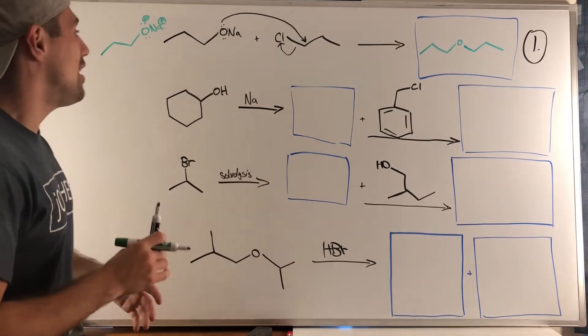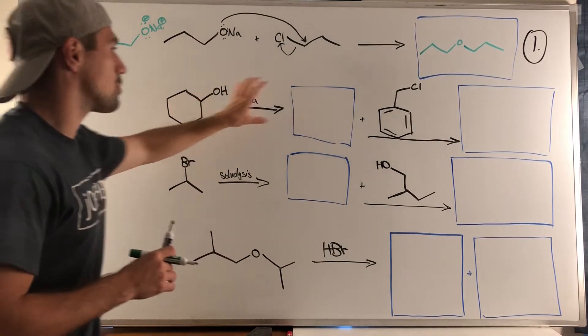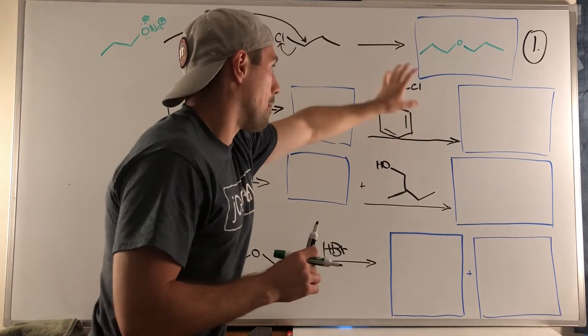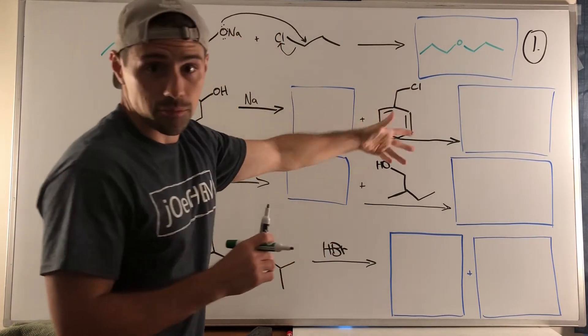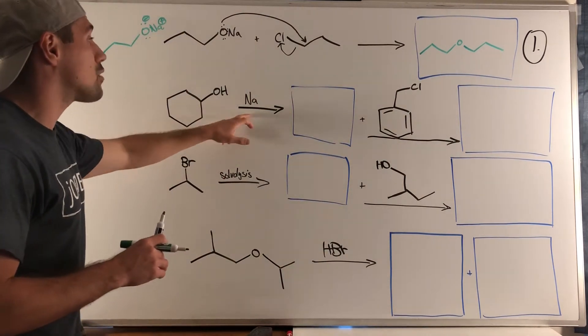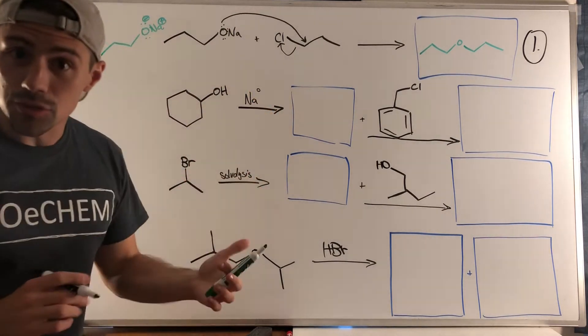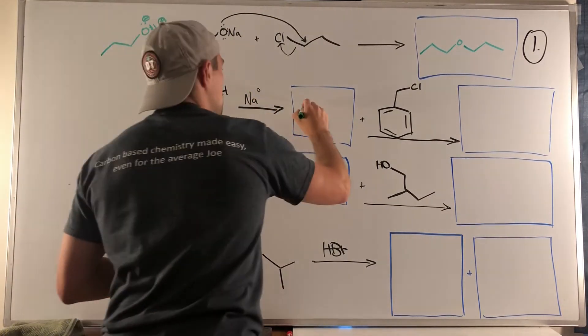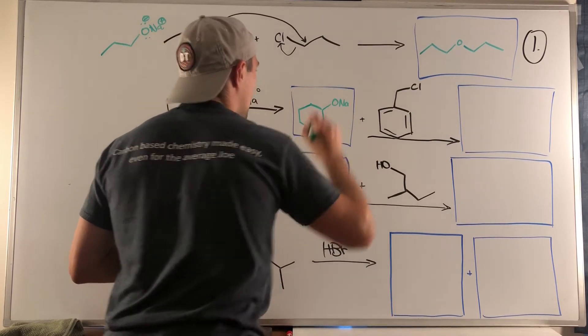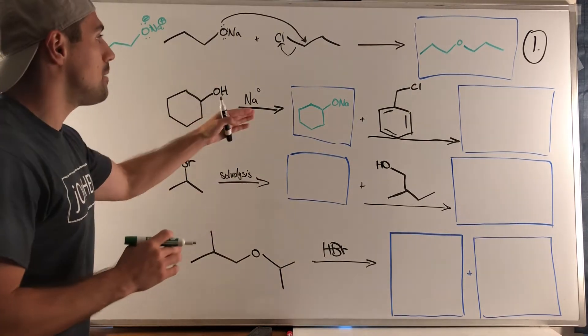In problem two, you can see in this first step we have to predict what's happening here, and then we're going to take the results of this and combine it with this substrate and predict a product. When we have an alcohol—I could include this little circle up here to say this is elemental sodium—but that's going to help us produce an alkoxide. Really, this is just a preparation of a good nucleophile.